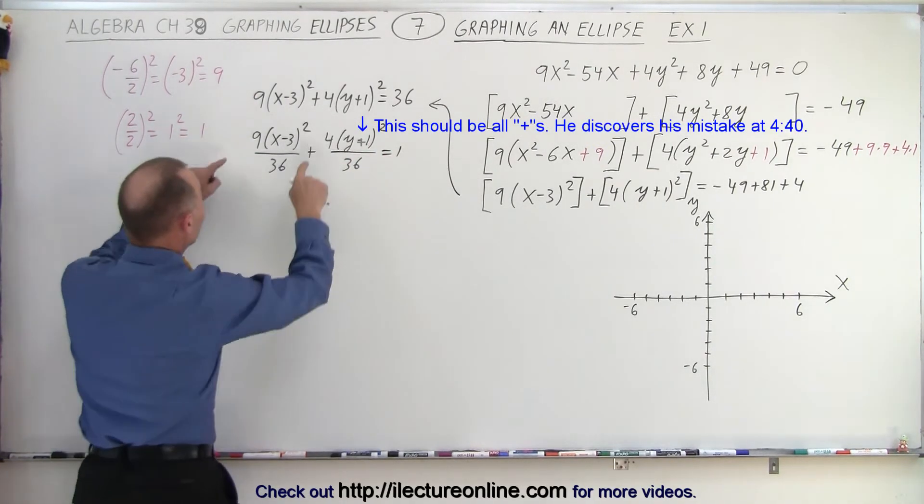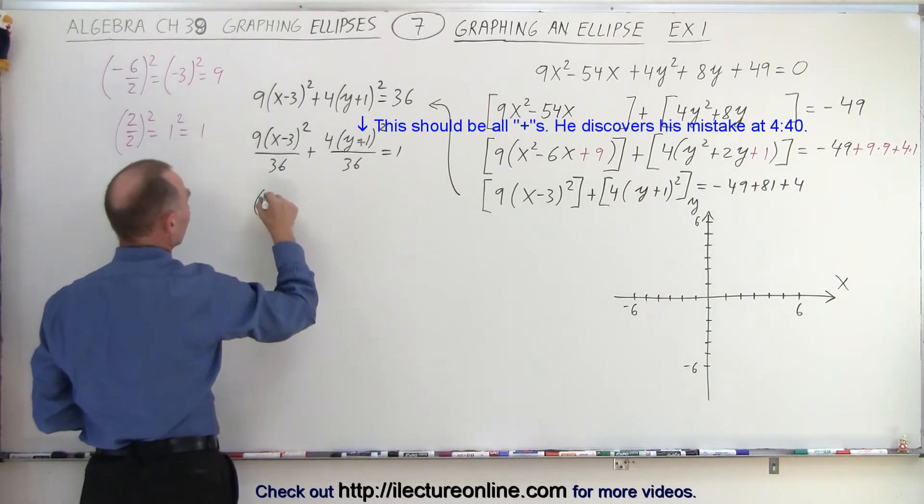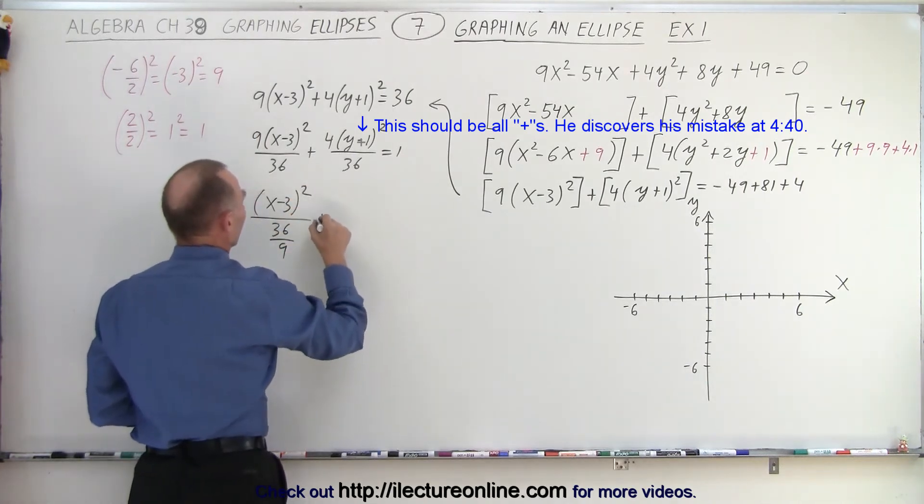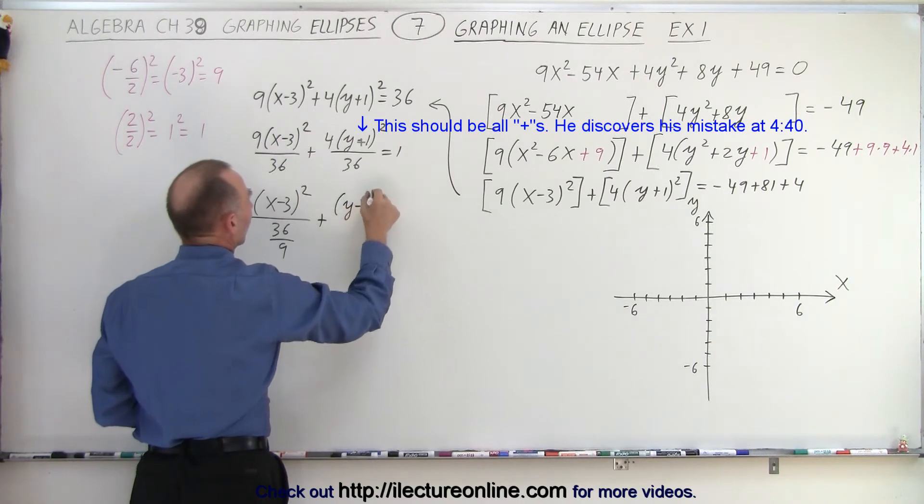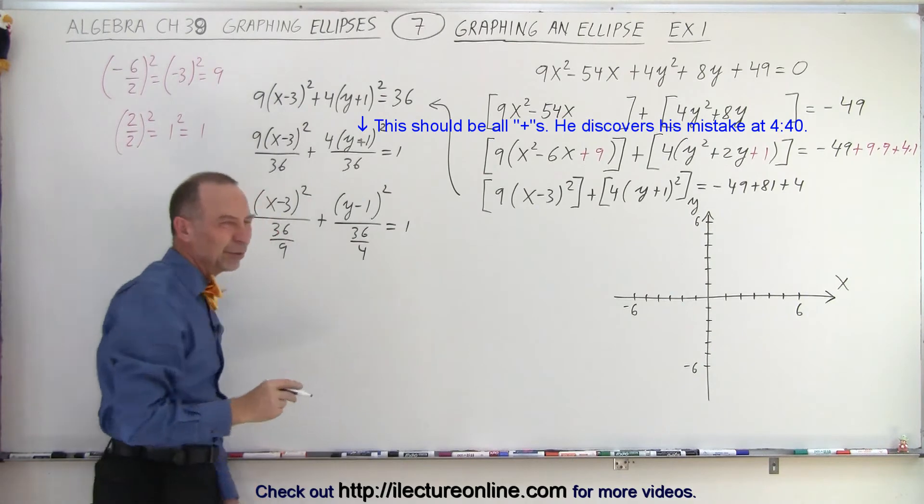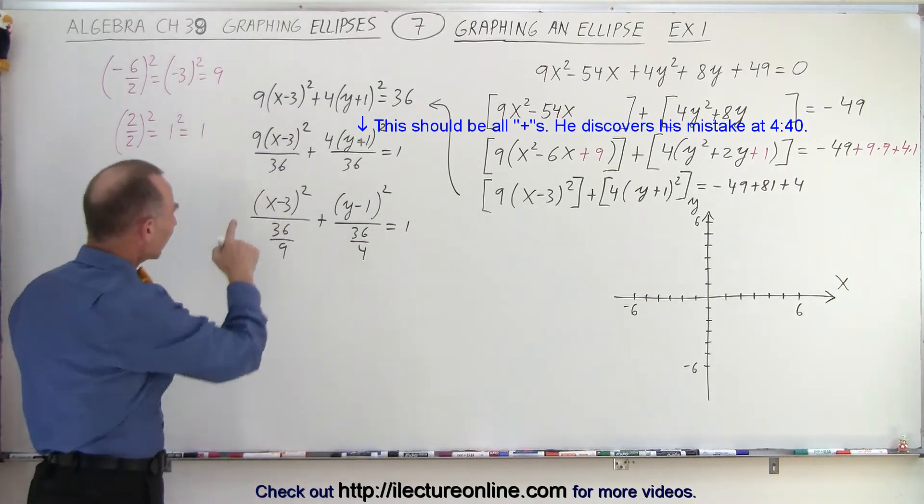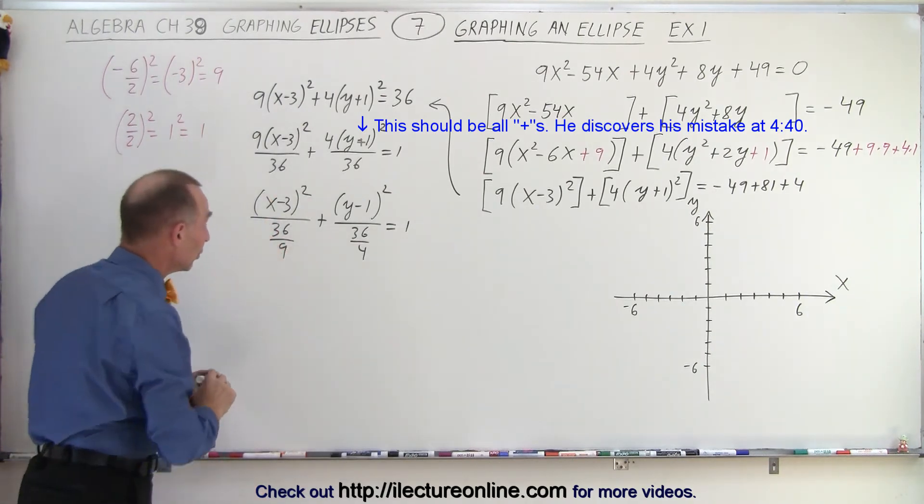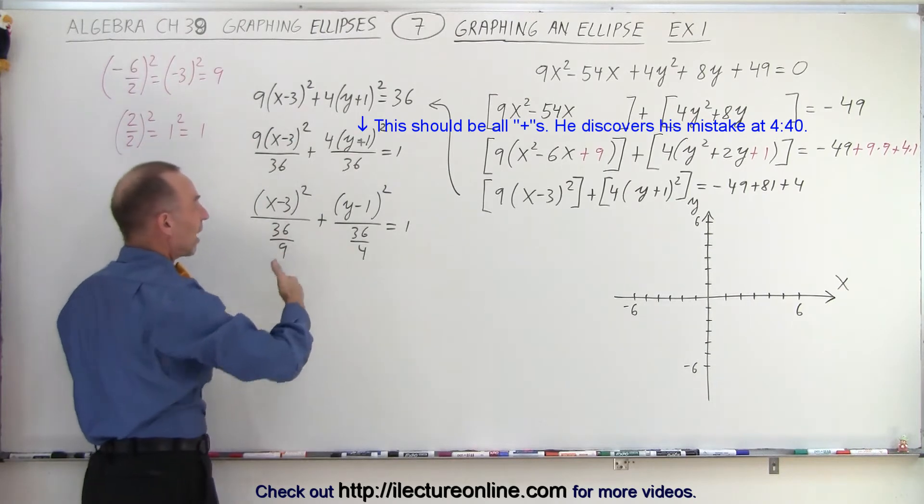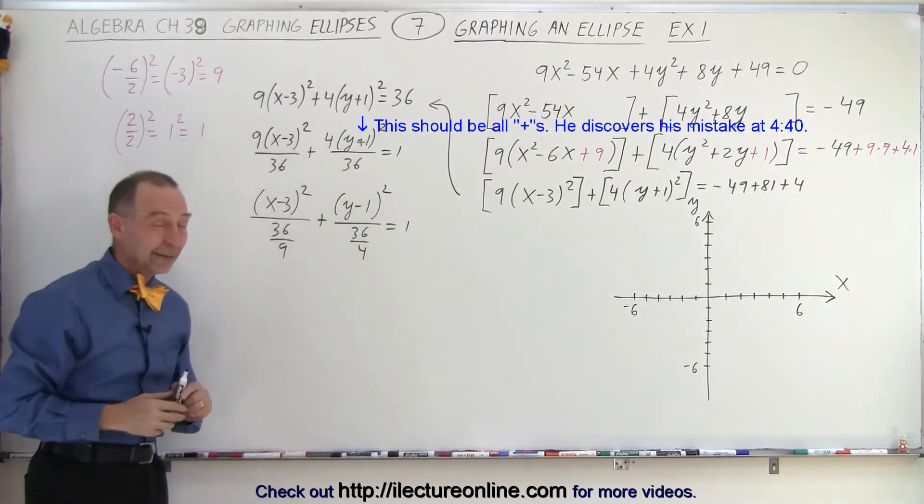Then we bring these two numbers and bring them down here. So this could be written as x minus 3 squared divided by 36 divided by 9, plus y minus 1 squared divided by 36 divided by 4, is equal to 1. You may wonder, well, how can I do that? Well, let me show you in reverse. If I divide by a fraction, that's the same as multiplying by its inverse. So the 9 would go back to the top. So you can see that's clearly the same thing.